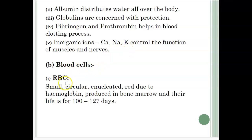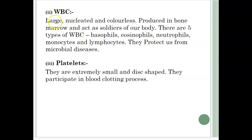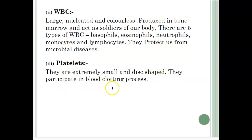Blood cells: first is RBC — small, circular, enucleated, red due to hemoglobin, produced in red bone marrow, with a lifespan of 100 to 127 days. WBC: large, nucleated and colorless, produced in bone marrow, and act as soldiers of our body. There are five types of WBC: basophils, eosinophils, neutrophils, monocytes and lymphocytes. They protect us from microbial diseases. Platelets: they are extremely small and disc-shaped, and they participate in the blood clotting process.